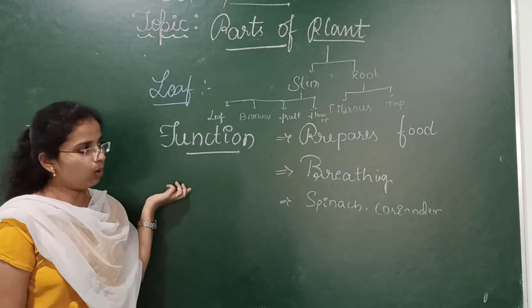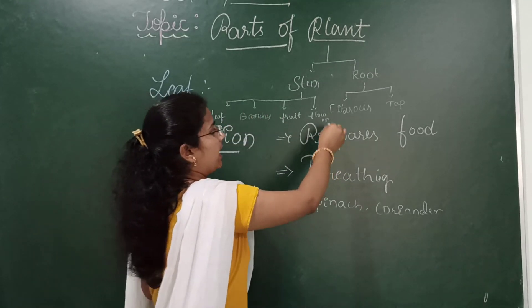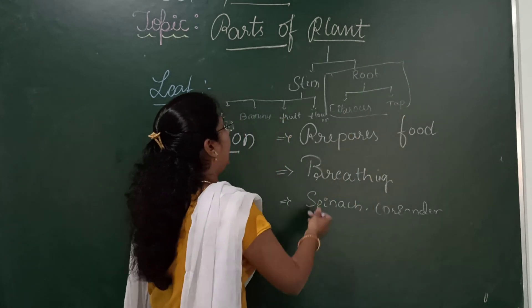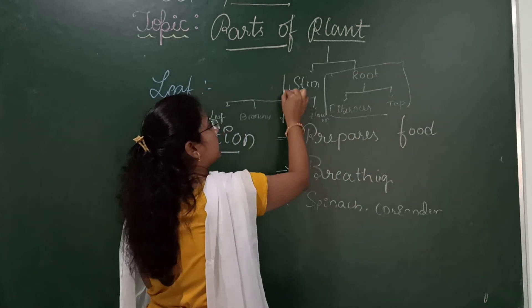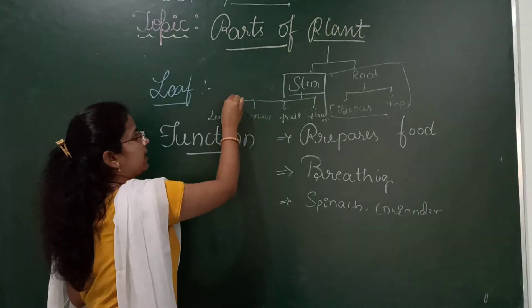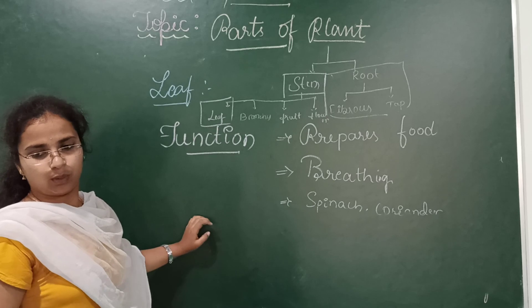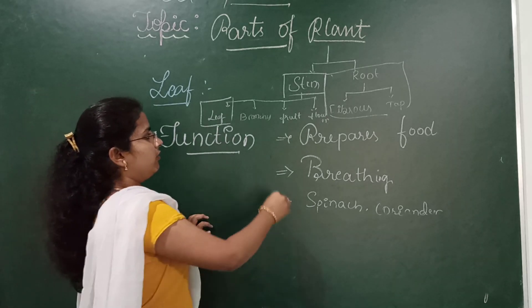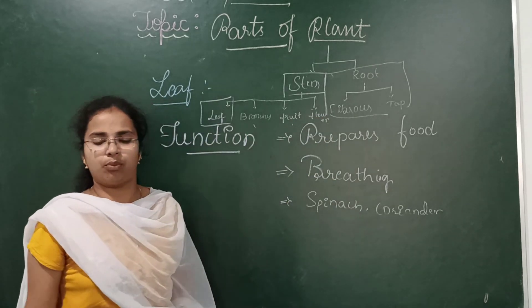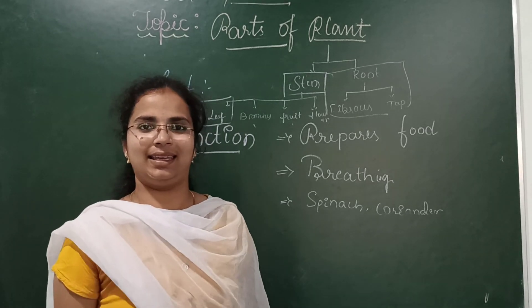Until now, we have completed two main things: we have completely studied about the roots, and about the stem we have got the knowledge. And in the stem, we have learnt about the leaf. Tomorrow in our next class, we shall learn these three main important things. Until then, take care. Bye. Thank you.